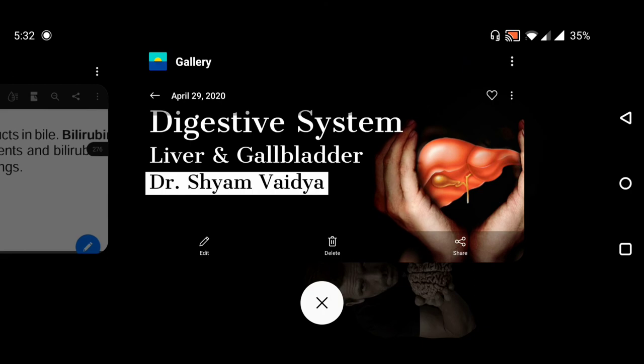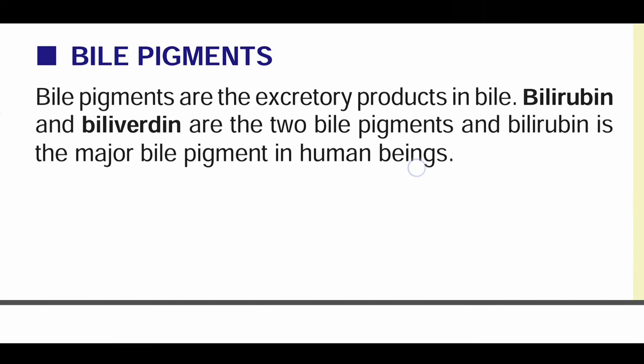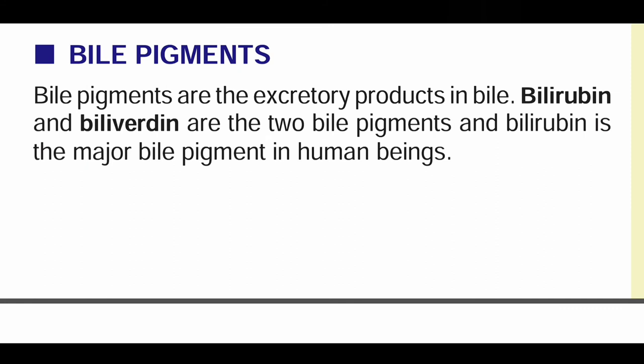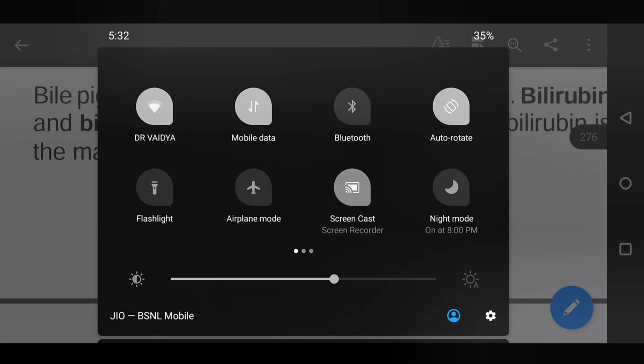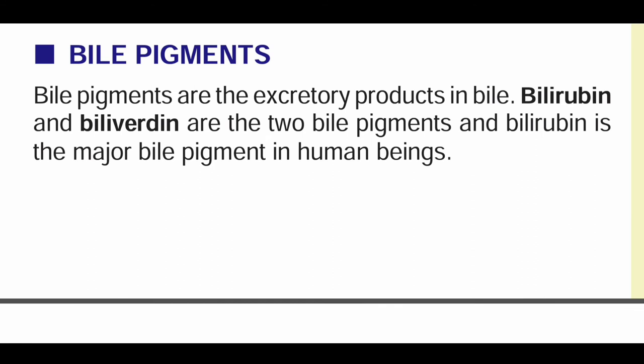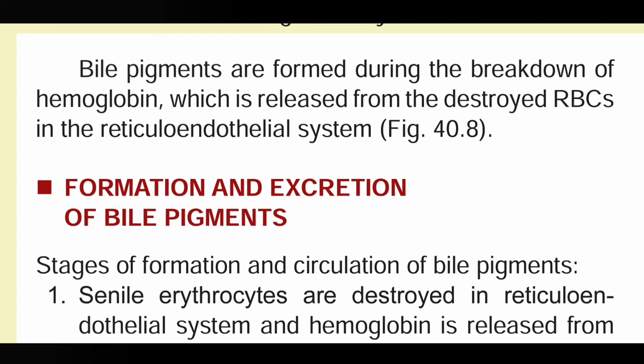Let's continue with the bile pigments. Bile pigments are excretory products in bile. Bilirubin and biliverdin are the two bile pigments, and bilirubin is the major bile pigment in human beings. Bile pigments are formed during the breakdown of hemoglobin.